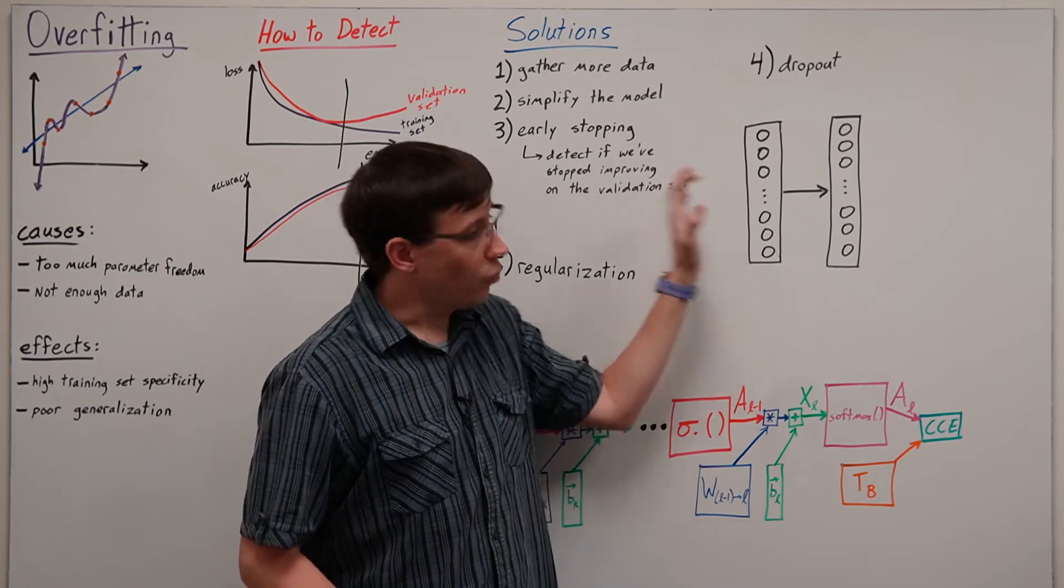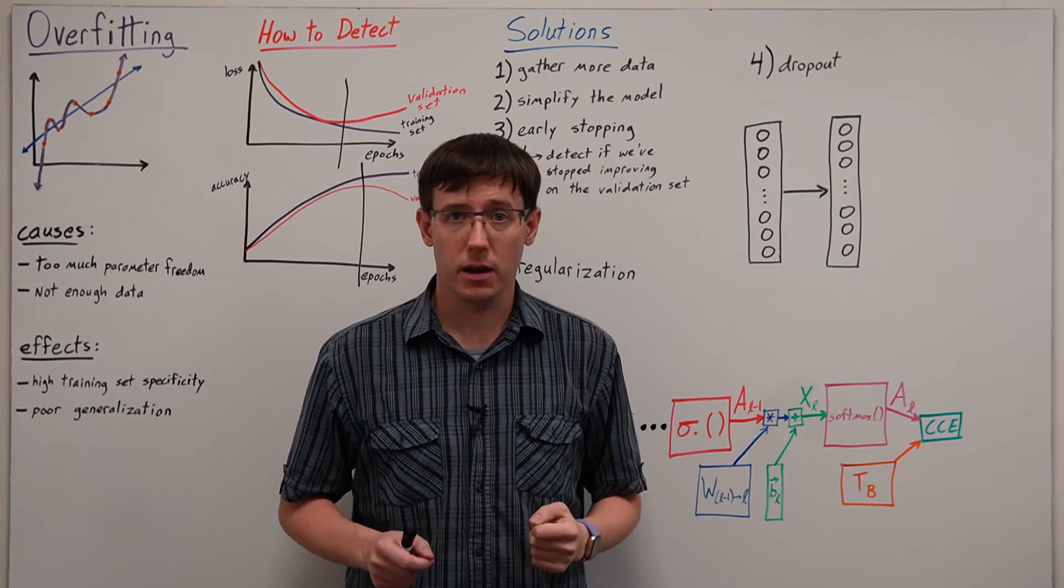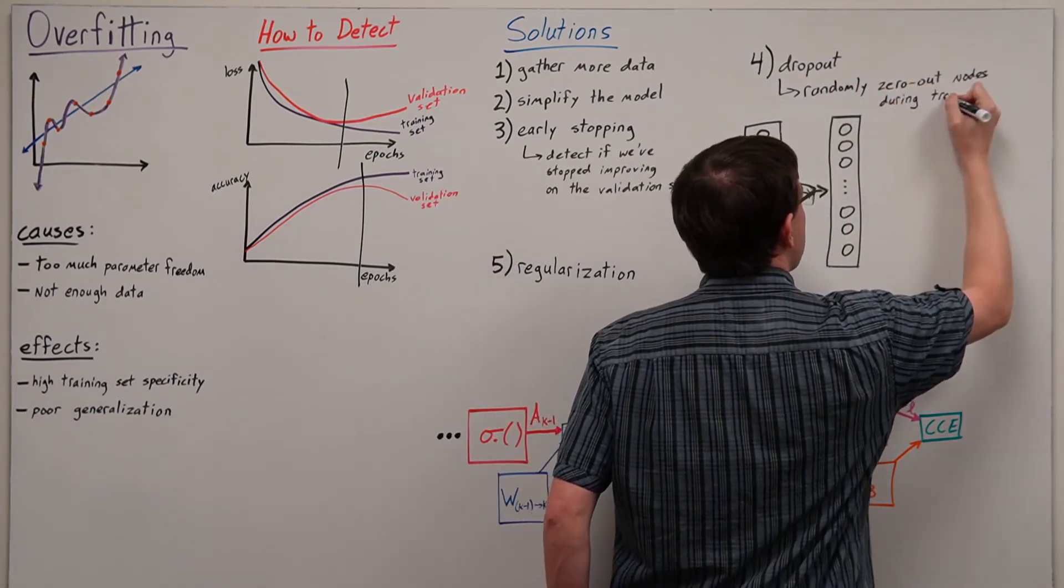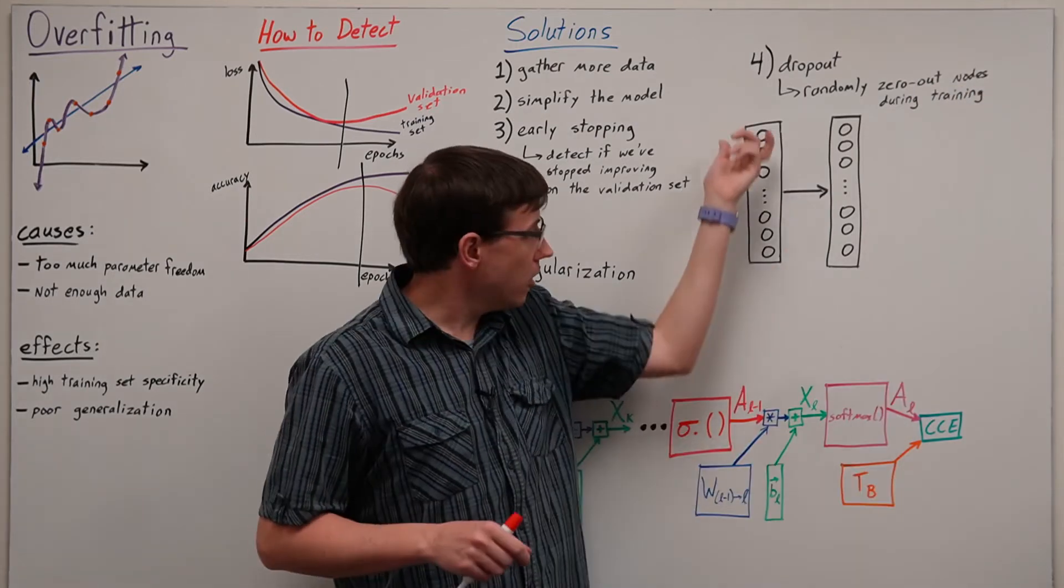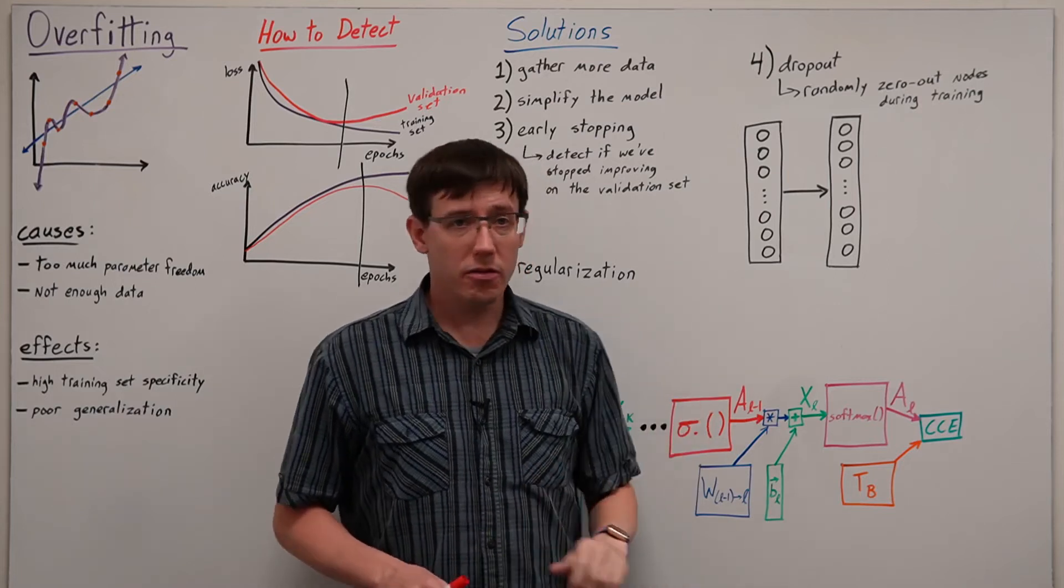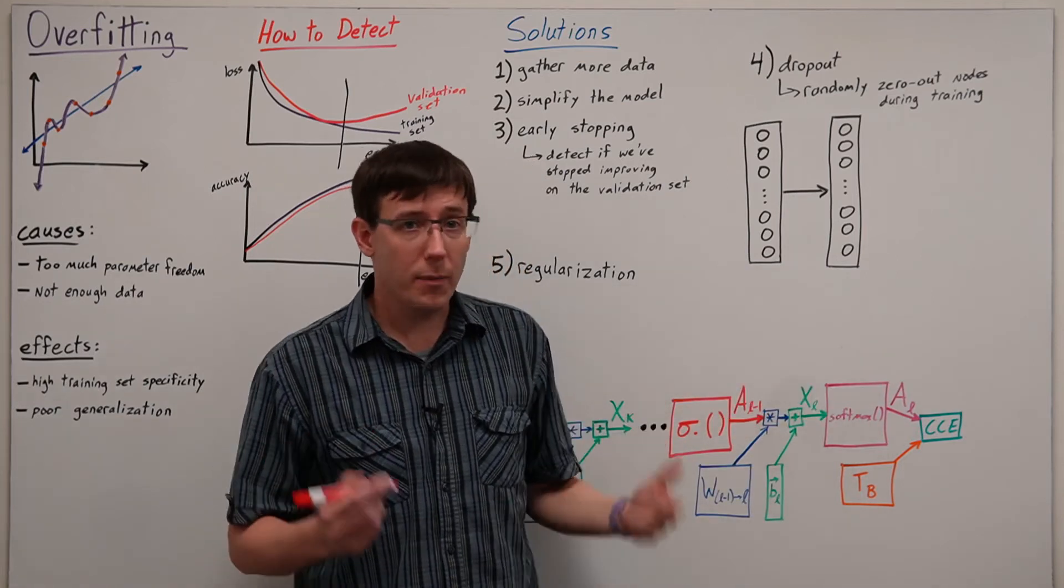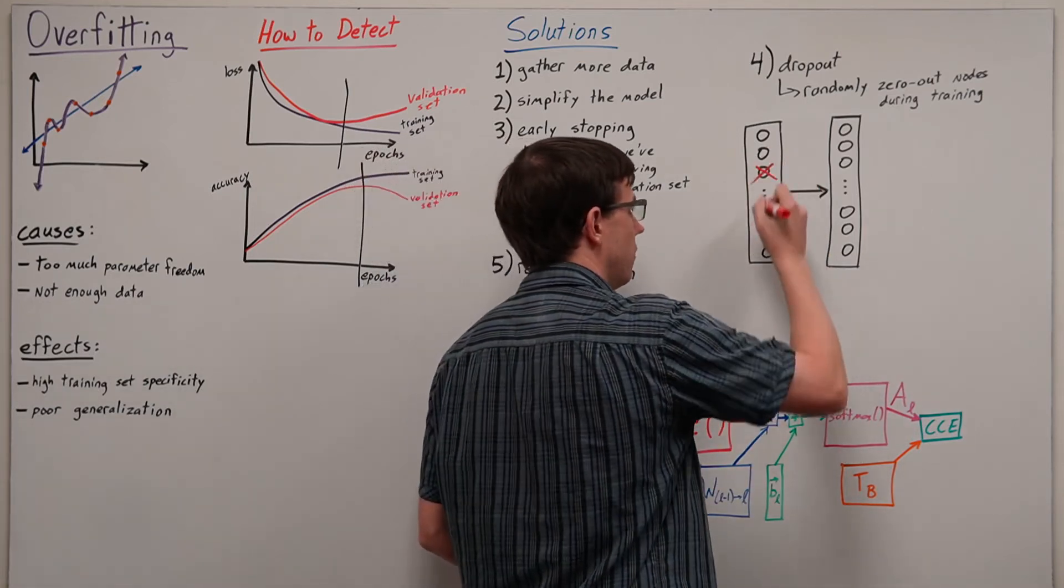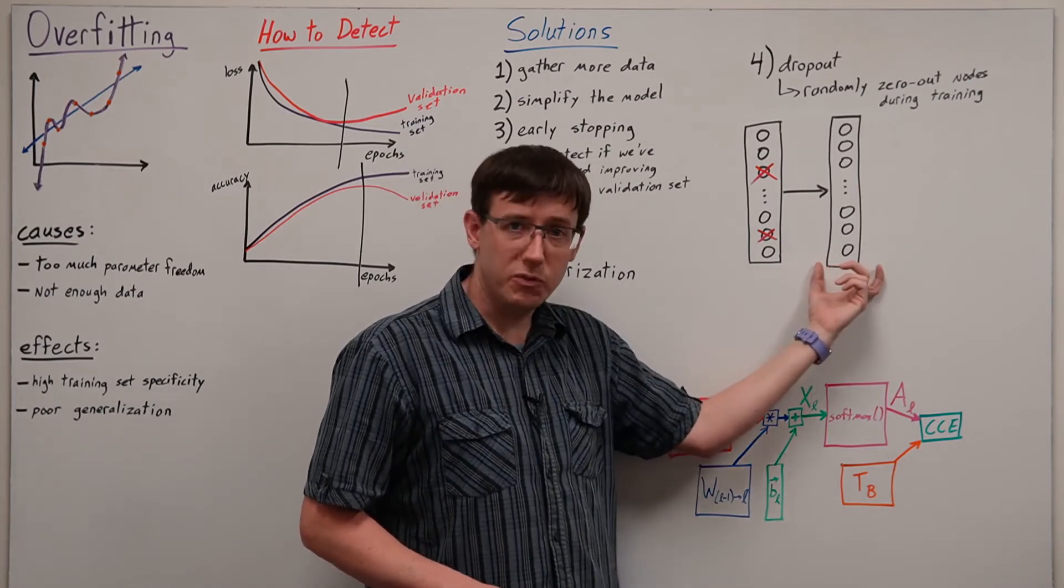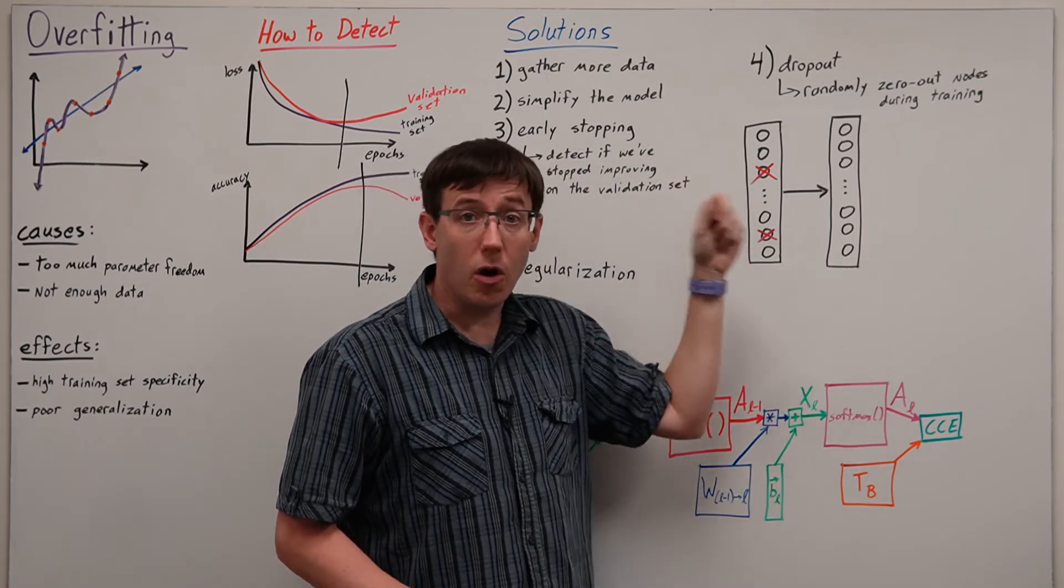And this leads us to the idea of dropout, where we will randomly zero out some of the activations in the network during the training. The idea is that if we have a large number of activations, and we're worried that they are getting too specific, then when we're training on some particular data point, we can just drop out a few of the neurons. And that forces the functions learned by subsequent layers of the network to not rely on those neurons always being active.